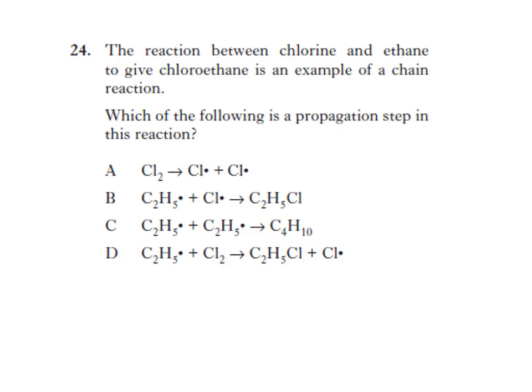Which of the following is a propagation step in this reaction? Propagation is where you make a new free radical. Option A is initiation because you start with no free radicals and make two. B is termination - adding two free radicals together to get a stable chemical. C is also termination. Whereas in D you have a free radical that reacts with a stable chemical, forms a new stable chemical, but you're left with a different free radical. Therefore D is propagation.